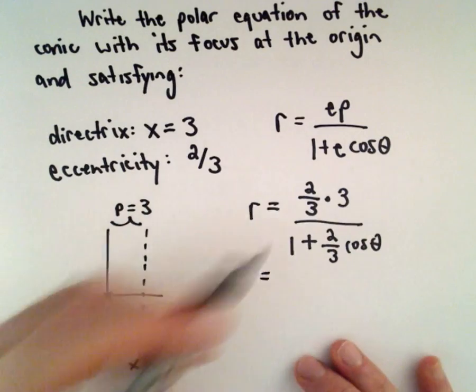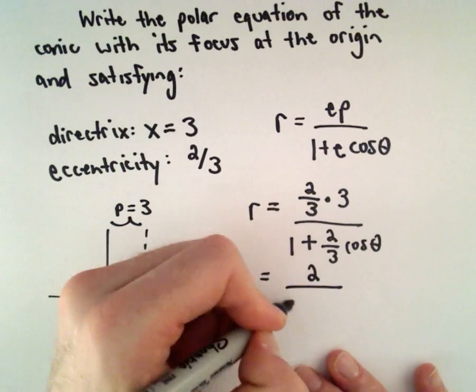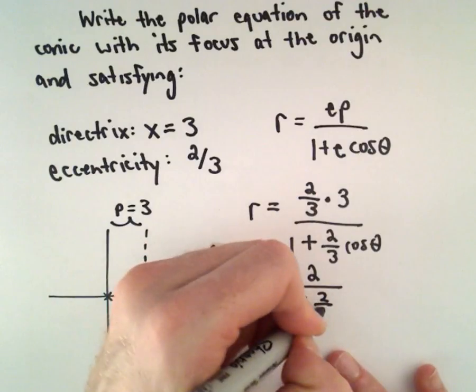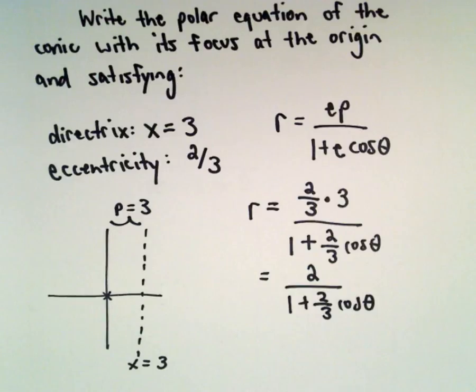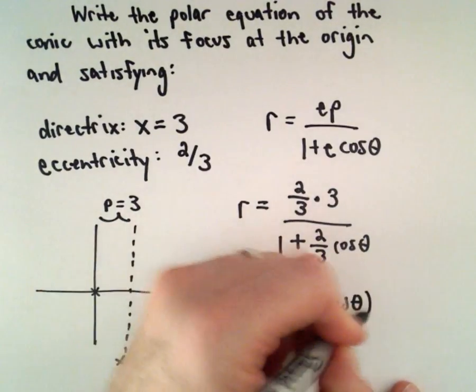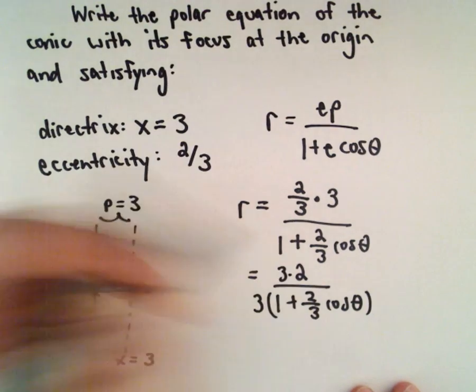In the numerator, we'll be left with 2 over 1 plus 2/3 cosine theta. Now to get rid of the fraction and make this look nicer, we can multiply both the denominator and numerator by 3.